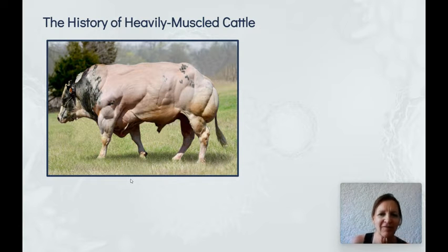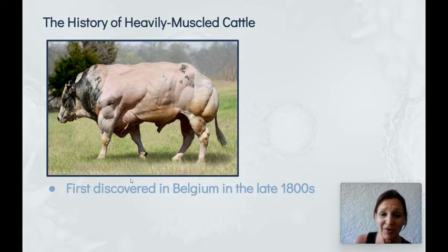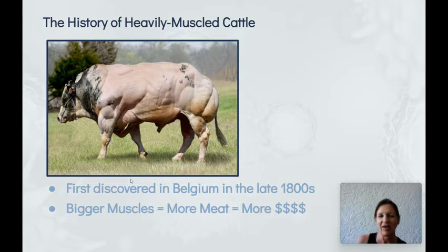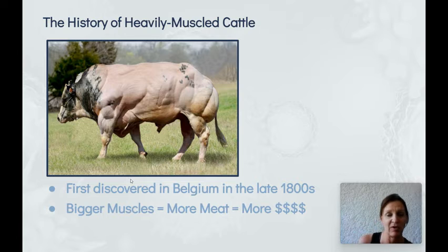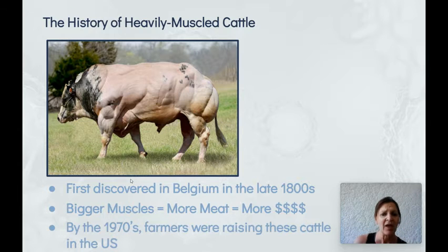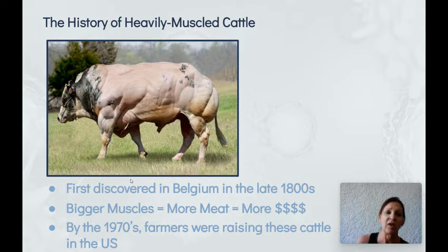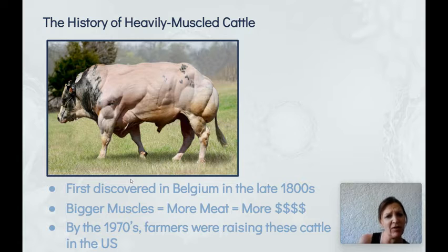Just a brief history of these heavily muscled cattle — they were first discovered in Belgium in the late 1800s. As we've discussed in class, bigger muscles equal more meat, which leads to more money for the farmers raising the cattle. Farmers in the United States recognized this too, so by the 1970s many US cattle farmers were also raising these heavily muscled cattle for greater profit.